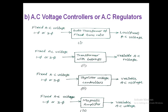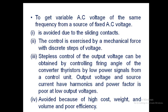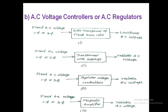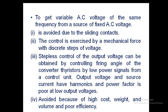Among these methods, some have drawbacks and some have advantages; most of the time we use the third one. The auto transformer is avoided due to sliding contacts, which cause poor efficiency with mechanical involvement. The transformer with tappings involves mechanical force and gives only discrete steps of output voltage. The thyristor AC voltage controller gives stepless control of output voltage using power semiconductor devices, controlled by low power signals from a control circuit by adjusting the firing angle.